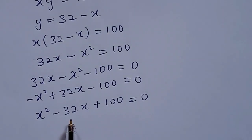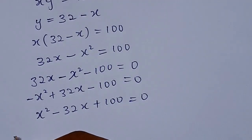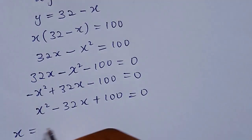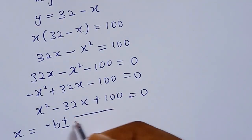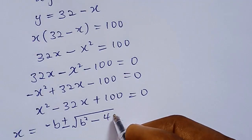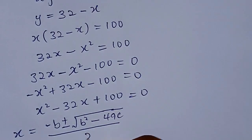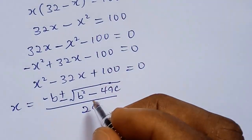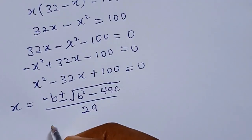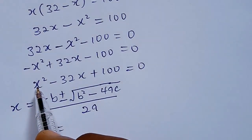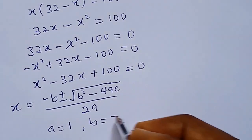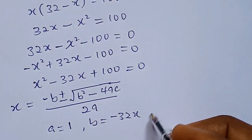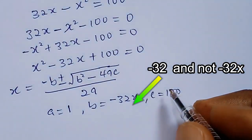From here we have a quadratic equation to solve for x, and to do that we'll be using the quadratic formula: x equals negative b plus or minus square root of (b squared minus 4ac), all over 2a. From our equation, a equals 1, b equals negative 32, and c equals 100.